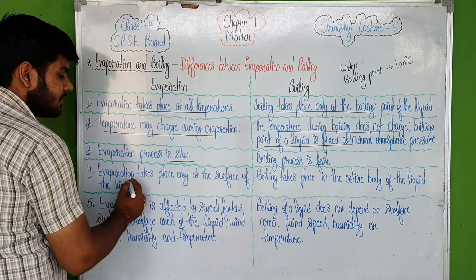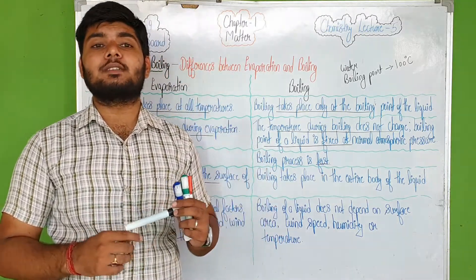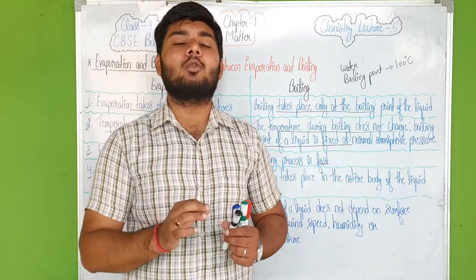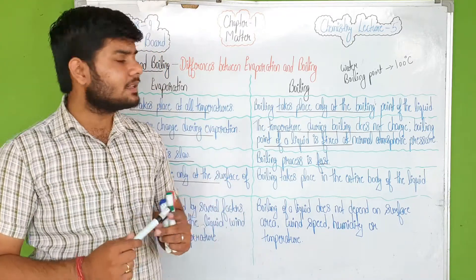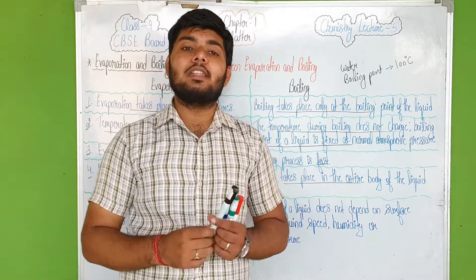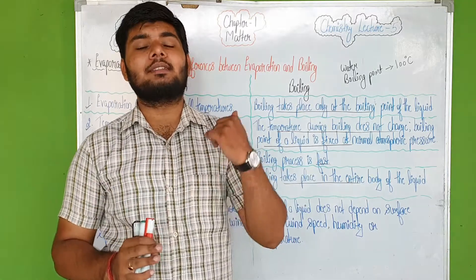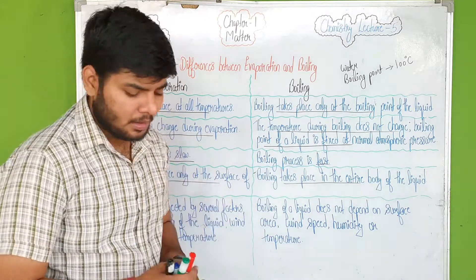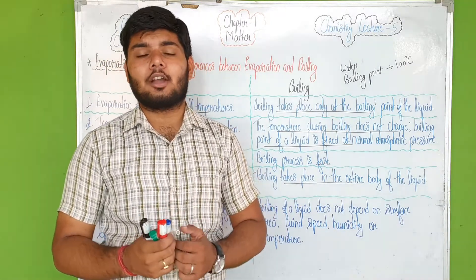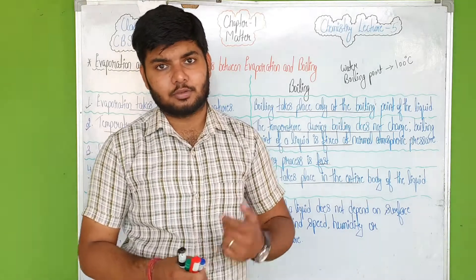The fourth point: evaporation takes place only at the surface of the liquid. When evaporation occurs, only the surface of the liquid is converted to gas — not any other part. Whereas boiling takes place in the entire body of the liquid. When you boil water at home, you can see bubbles — the water molecules throughout are heated and converted to vapors.